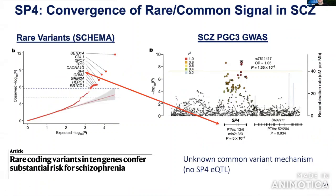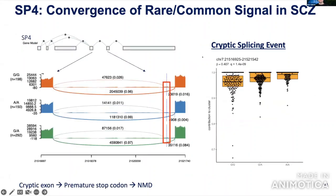We can also recover mechanisms for known rare variant risk genes. SP4, identified from SCHEMA as a rare variant schizophrenia gene, has a GWAS locus whose mechanism was unknown because there's no eQTL for SP4 in the fetal brain. However, we find a very significant splicing QTL — a cryptic splicing event where a new unannotated exon between exons 4 and 5 gets spliced in with the risk allele.